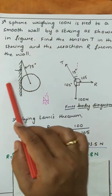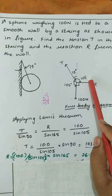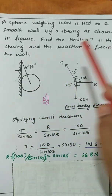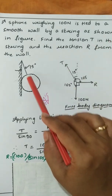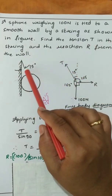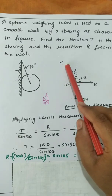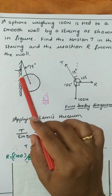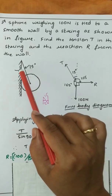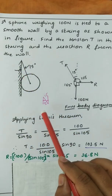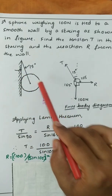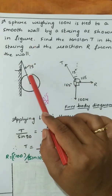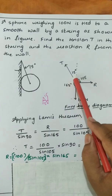This is the wall. There will be a reaction from the wall, that is R. The reaction is always perpendicular to the wall. And we need to find the tension T in the string. The angle between the wall and the string is 15 degrees. By alternate angles, you can see that between this string and the vertical it will also be 15 degrees.